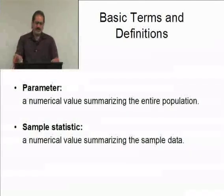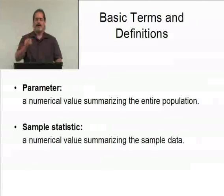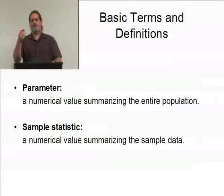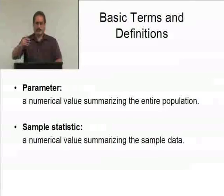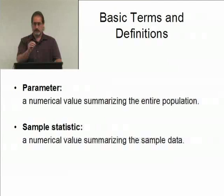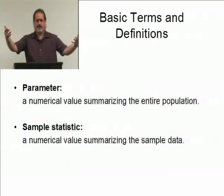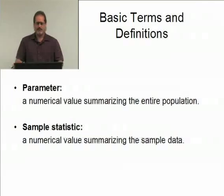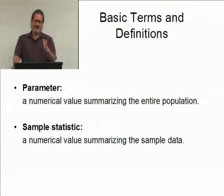Now, parameter versus statistic. A parameter is a numerical value summarizing the entire population. For example, suppose I'm interested in the proportion of student-athletes at the community college level who actually graduate with a degree. Somewhere out there is a true proportion of student-athletes in community colleges who did graduate. That's extremely difficult to get at — campuses may not collect that data, or it could be collected in a way that's very difficult to retrieve.